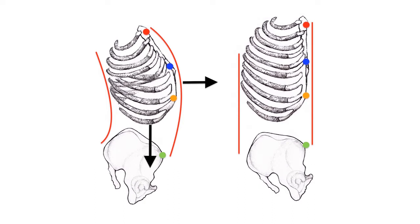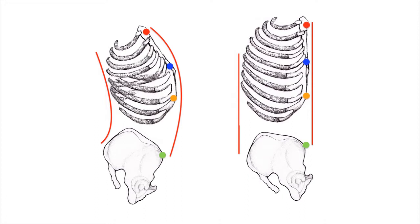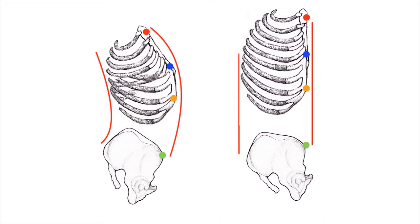To lengthen the thoracolumbar fascia, we must lengthen the torso. The way to do that is to orient the ribcage and pelvis so that they are both upright, but also we must lift the ribcage up away from the pelvis.